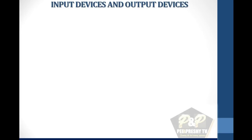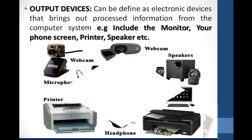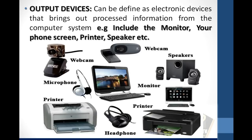Input and output devices. Input devices can be defined as electronic devices used to send information to the computer system. Examples include the keyboard, the mouse, joystick, touchpad, scanner, etc. Output devices can be defined as electronic devices that bring out processed information from the computer system. Examples include the monitor, your phone screen, printer, speaker, etc.